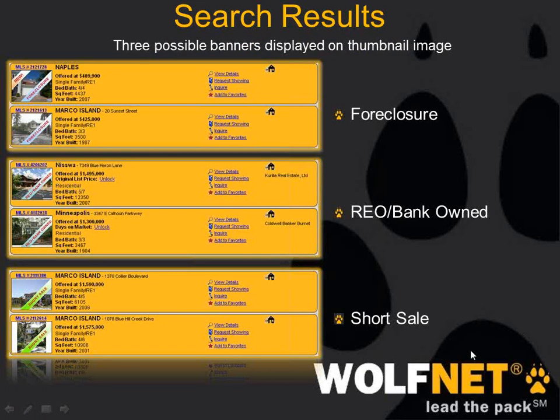On the search results page, there are three different possible banners that can be displayed. You can either have a foreclosure banner, REO or bank-owned, or short sale, depending on the property and the listing.